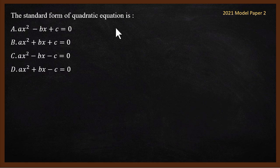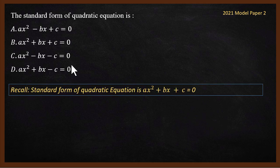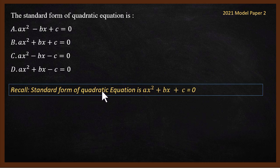The second question is on quadratic equation. This is model paper 2 question. This is definition question. What is the standard form of quadratic equation? We have to say which one is the official standard form. So standard form of quadratic equation, ax² + bx + c = 0 is the standard form.